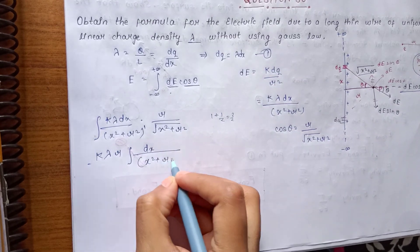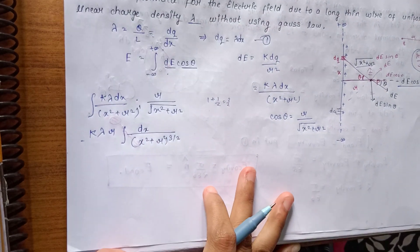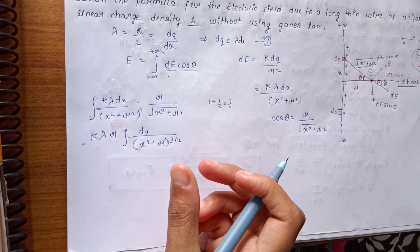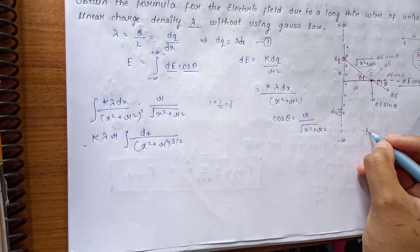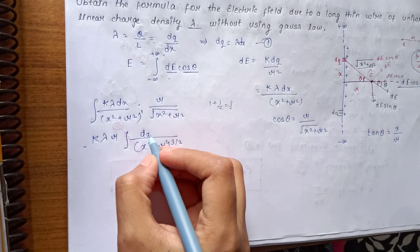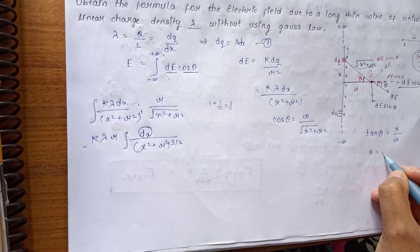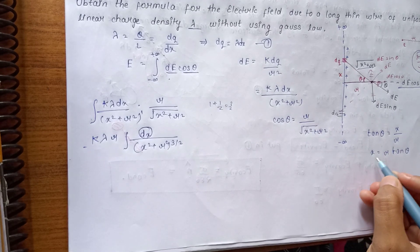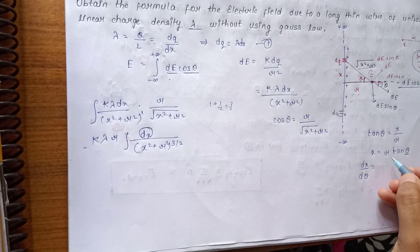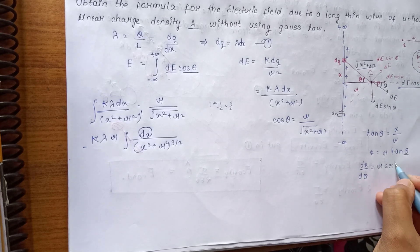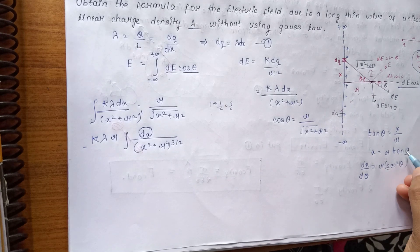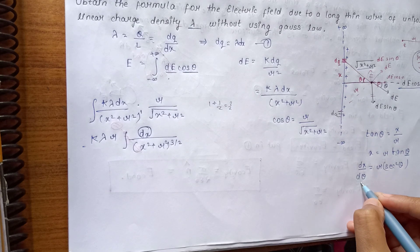The denominator becomes (x² + r²)^(3/2), which is complex to integrate. So we use a substitution: let x = r tanθ. Then tanθ = x/r (perpendicular upon base). Differentiating with respect to θ: dx/dθ = r sec²θ, so dx = r sec²θ dθ.